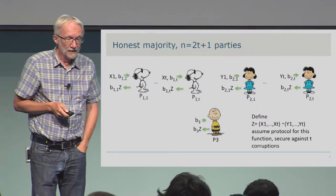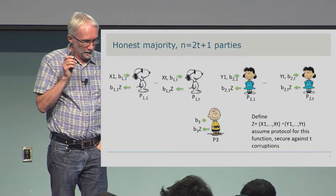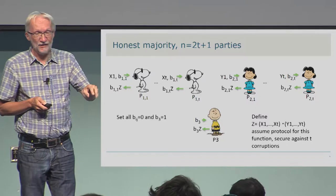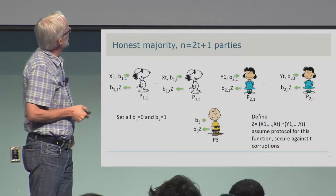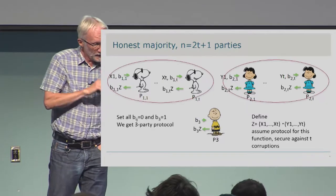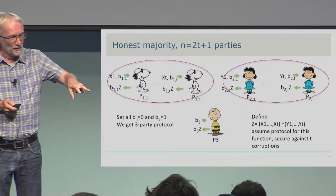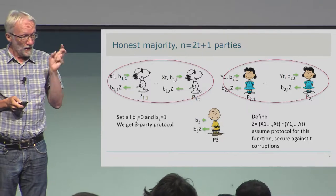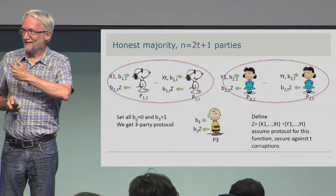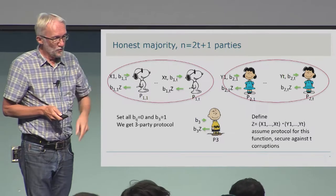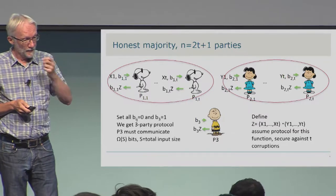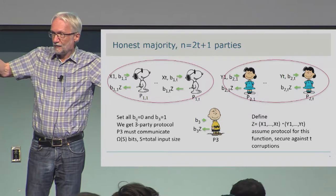We assume a secure protocol for this function, secure against t corruptions. We hard-code inputs in a particular way: we set all B_{i,j} for the top-row parties to zero, and only Charlie Brown's input bit to one, so he's the only one who learns something. Gluing all the Snoopys together, all the Lucys together, gives a three-party protocol where any one of these three parties can be corrupt — exactly mirroring the previous three-party situation. So Charlie Brown must communicate at least the full S bits of total input.